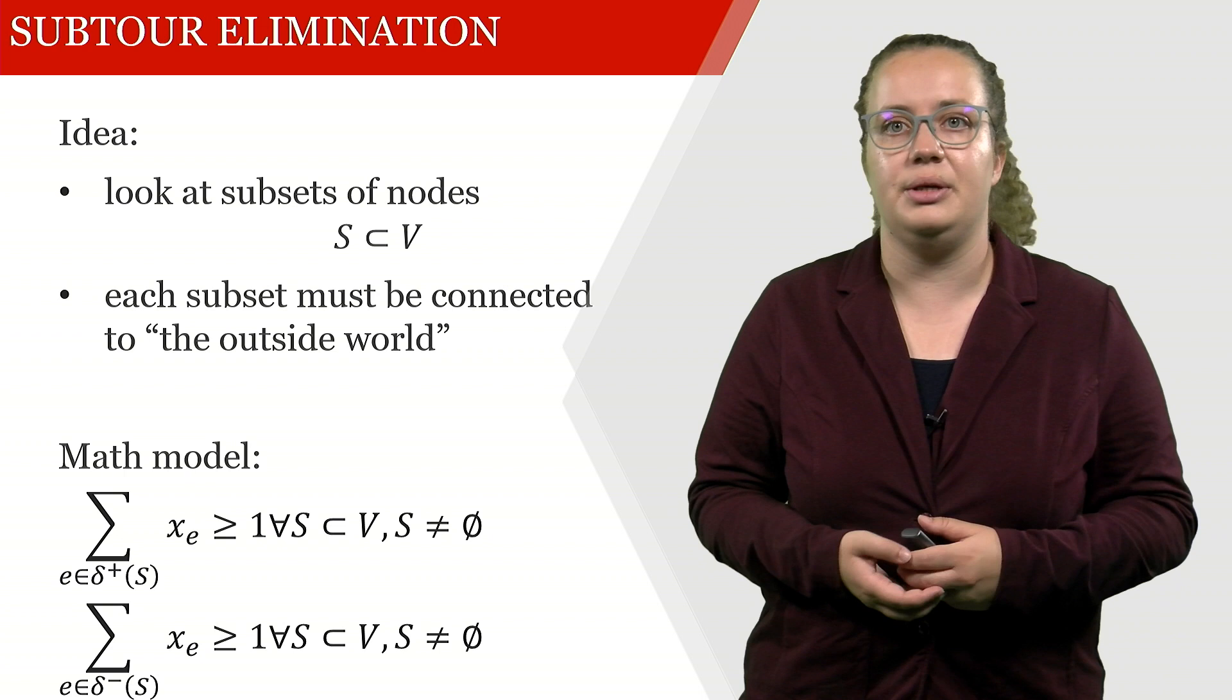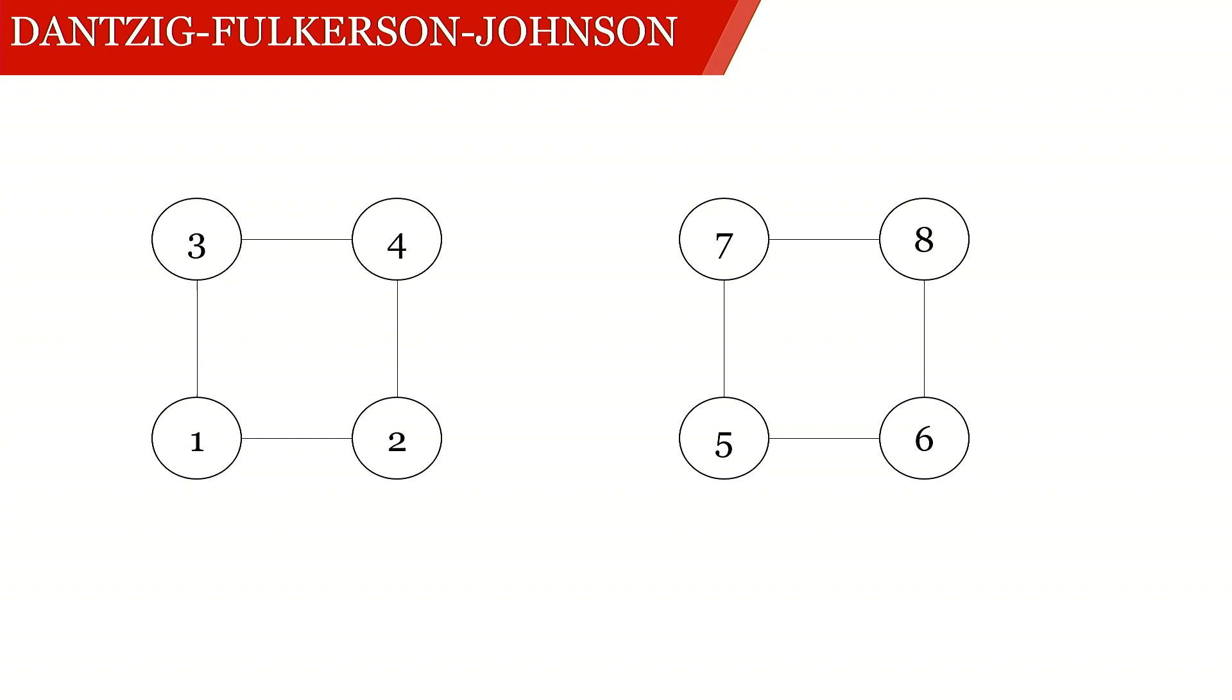So here we have an instance with eight nodes and these eight nodes actually form two different subsets, one with the nodes 1, 2, 3 and 4 and the other one with 5, 6, 7 and 8. Now if we look into this subset of nodes, so the subset containing the nodes 1 and 3, then what we see is that the number of arcs that leave the subset 1 and 3 is exactly 1. It's the one that goes from 3 to 4 and we're completely fine.